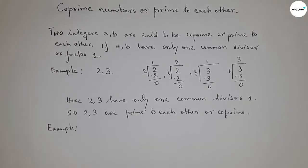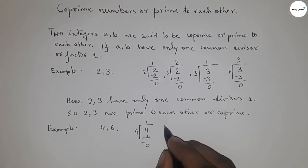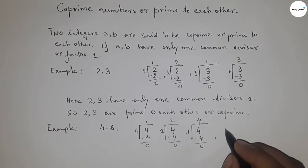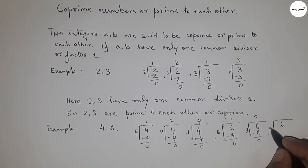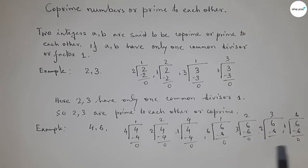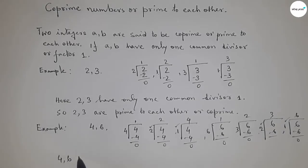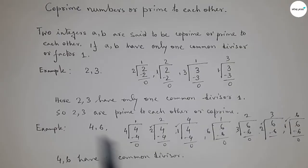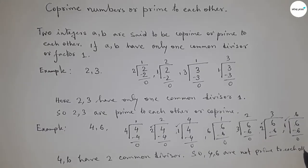Now let us take another example: 4 and 6. Now, 4 can be divided by 4 itself, also by 2, and also by 1. And 6 can be divided by 6 itself, also by 3, also by 2, and also by 1. So we got two common divisors: 2 and 1. This does not satisfy the definition of co-prime, so 4 and 6 are not co-prime integers.